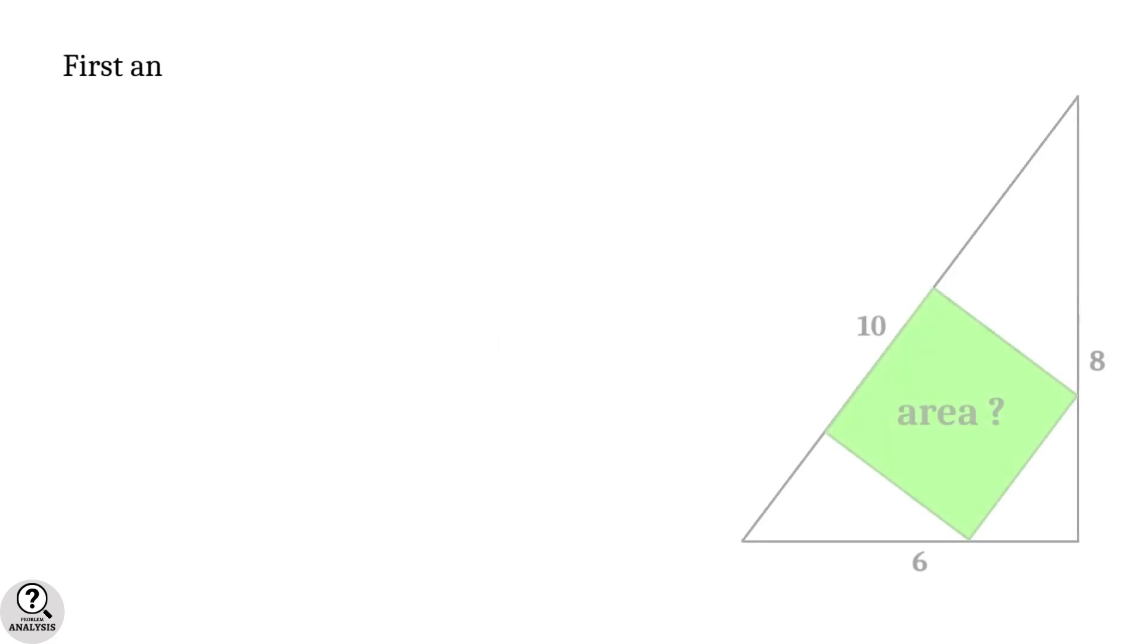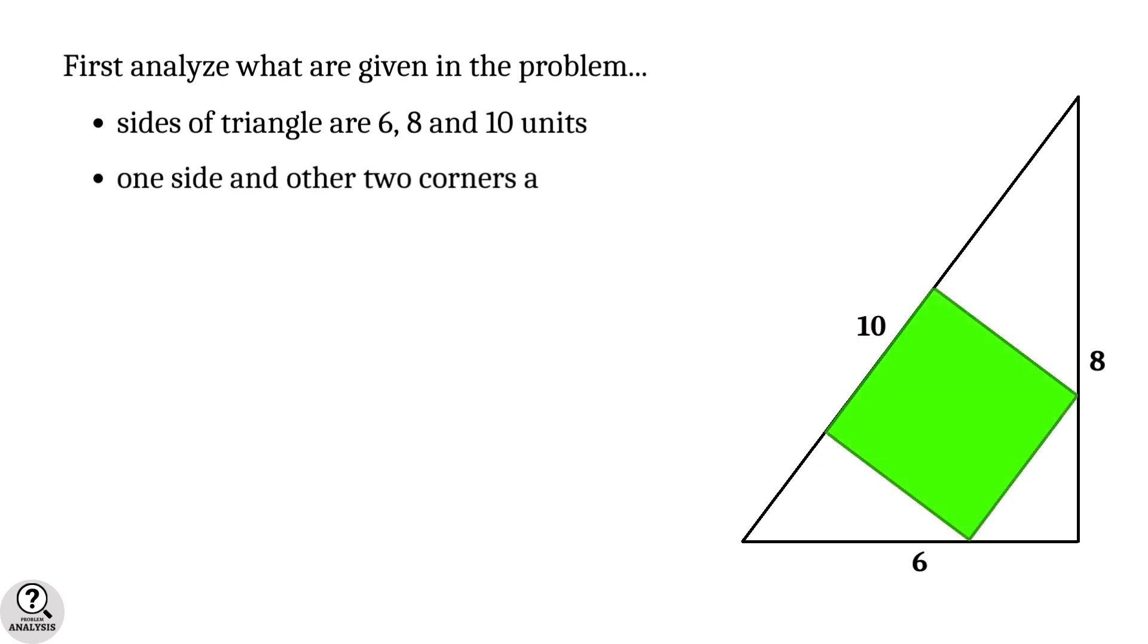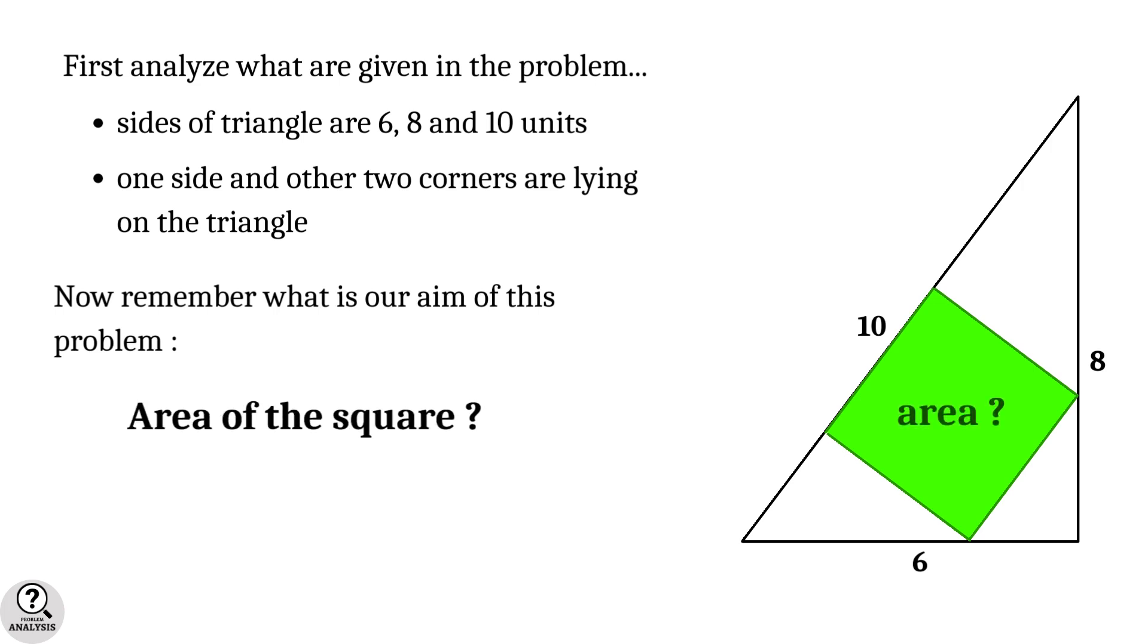First, we have to analyze the problem. It is given that the sides of the triangle are 6, 8, and 10 units, and one side and the other two corners are lying on the triangle. Now, what exactly is our aim of this problem? It is nothing but to find the area of the square.